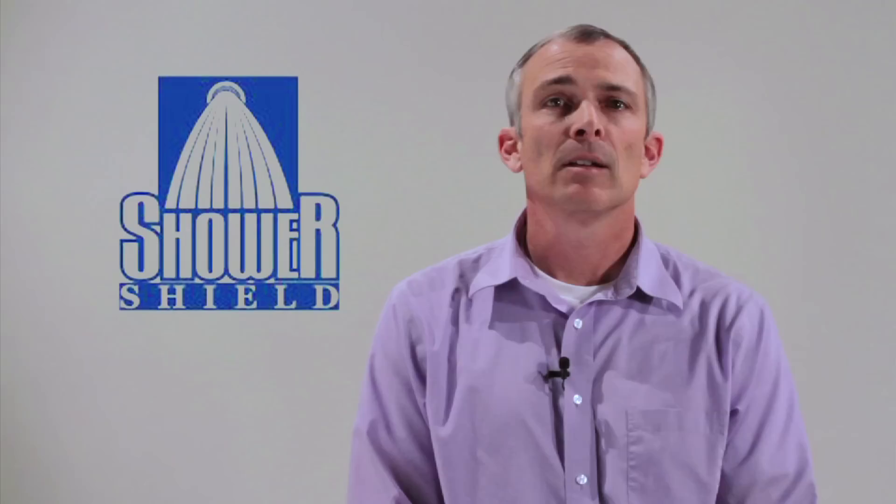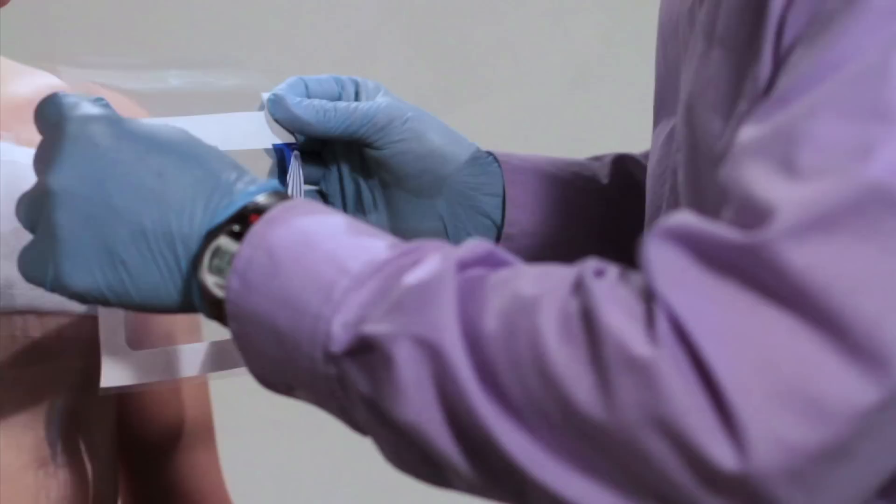To apply the dressing, find the top of the dressing and peel back the wax paper only on the top edge. And apply that top edge about an inch above the site, making sure that you get a really good seal.